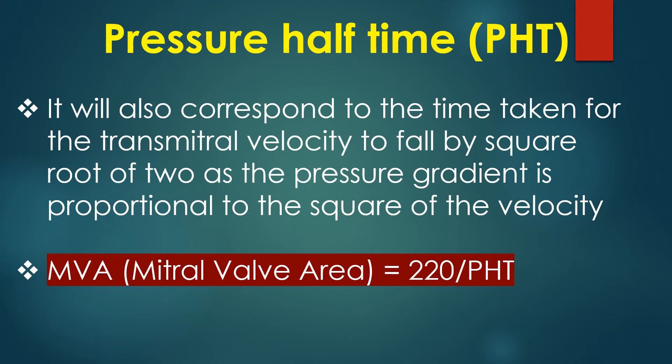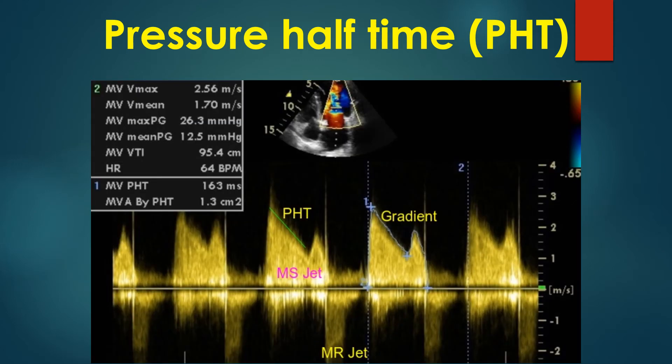Mitral valve area is equal to 220 divided by pressure half-time. In this image, the green cursor measures the pressure half-time of the mitral stenosis jet. In this case, the pressure half-time was 163 ms and the estimated mitral valve area by pressure half-time was 1.3 cm².